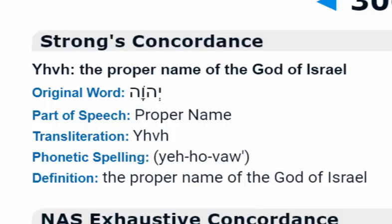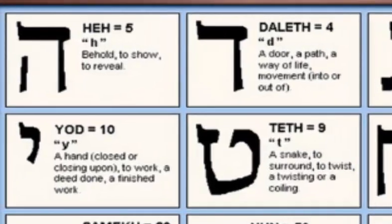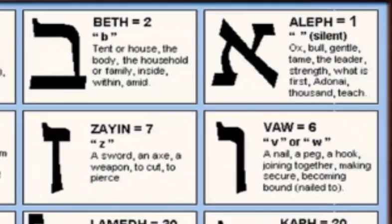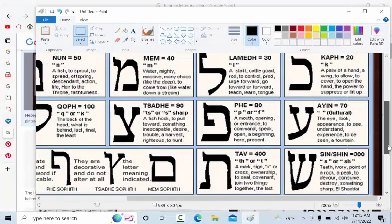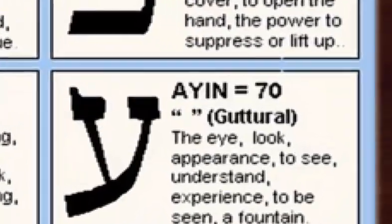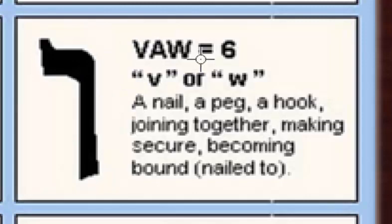Let's look at the difference. There's Yad and He — we have no problem with those three syllables. But there you see Vav is saying a nail, a peg, a hook, joining together, making secure, becoming bound. I'm looking for the W sound. They're saying it's interchangeable — it's either a V or a W sound, because they both mean the same thing.